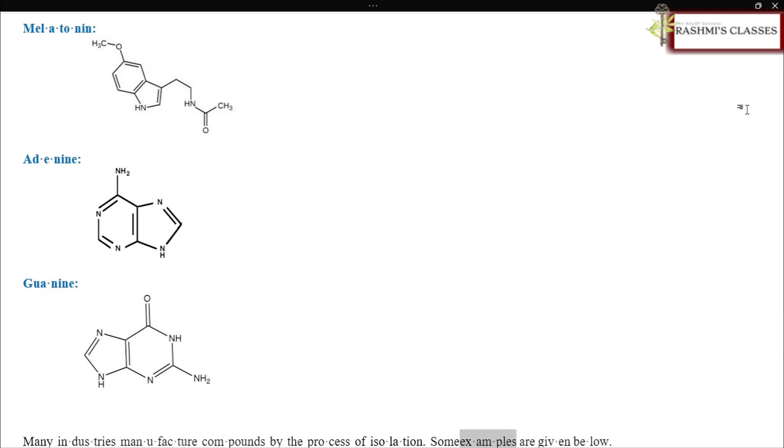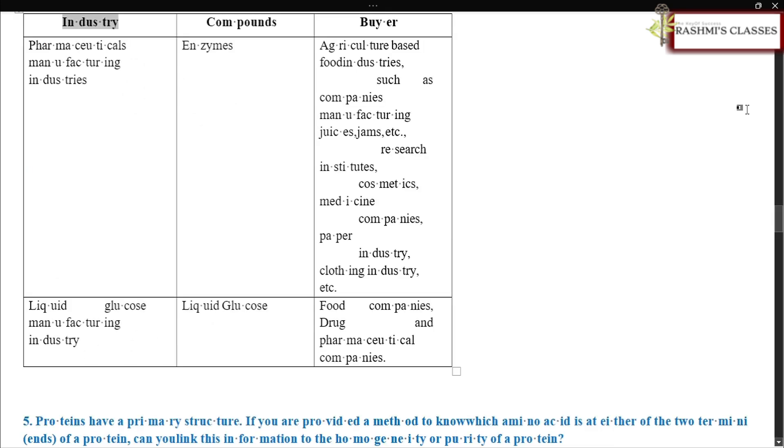Many industries manufacture compounds by the process of isolation. Some examples are given below. Industry, compounds, buyer. Pharmaceuticals manufacturing industries, enzymes. Agriculture-based food industries such as companies manufacturing juices, jams, etc., research institutes, cosmetics, medicine companies, paper industry, clothing industry. Liquid glucose manufacturing industry, liquid glucose. Food companies, drug and pharmaceutical companies.